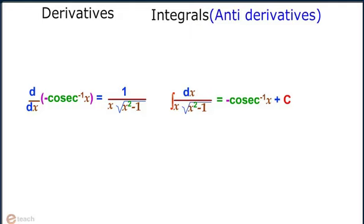Therefore, integration of dx divided by [x times the square root of (x² minus 1)] equals minus cosec⁻¹x plus c.